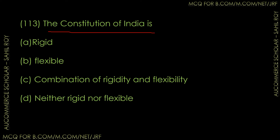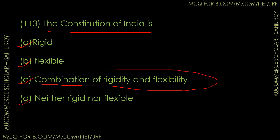Question number 113: The Constitution of India is — rigid, flexible, a combination of rigidity and flexibility, or neither rigid nor flexible? The correct answer is Option C — the Constitution of India is a combination of rigidity and flexibility. The Constitution is somewhat rigid and somewhat flexible — where rigidity is needed it is very stiff, and where changes can be made, it is flexible.